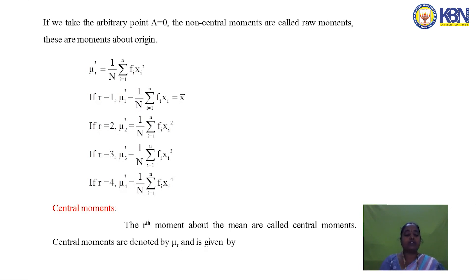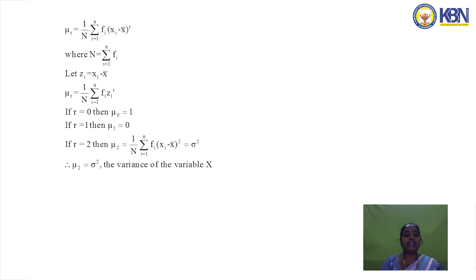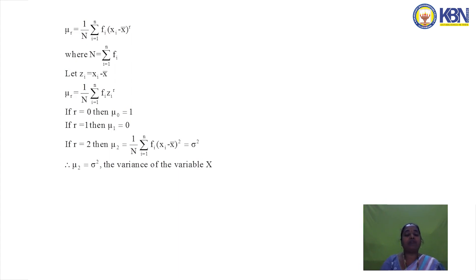The rth moments about the mean are called central moments, where deviations are taken about the central value. These are denoted μr, given by μr = (1/N) Σfi(xi − x̄)^r. If we let zi = xi − x̄, then μr = (1/N) Σfi·zi^r.